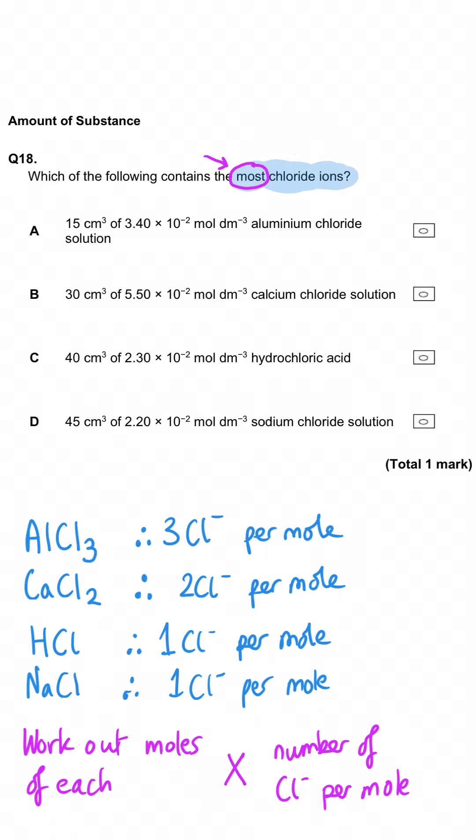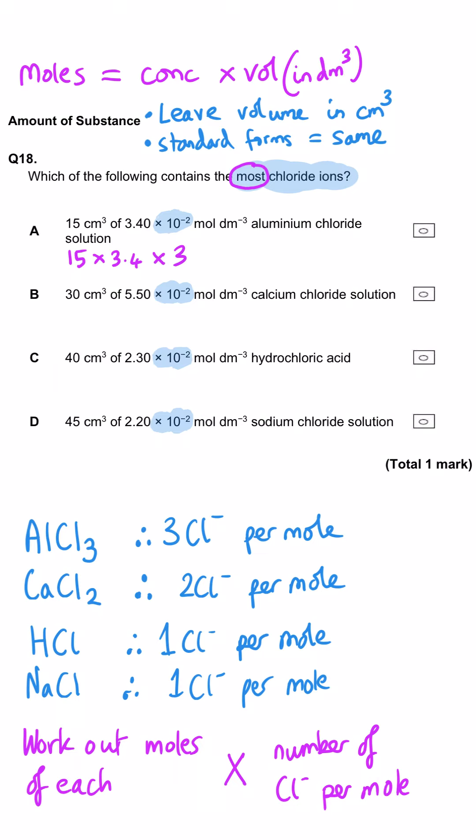We can cut a couple of corners. First, moles equals concentration times volume. This should be in dm cubed, but we've not been asked to calculate the moles and we want to be quick. We can leave the volume in cm cubed because it's still going to give us an answer proportionate to the correct moles value. The second corner is looking at these standard form values. They are all times 10 to the minus 2, so we might as well not include them in our calculation. For A, 15 multiplied by 3.4 multiplied by 3 gets us 153 as our value. It's not the correct number but proportionate to the correct answer.